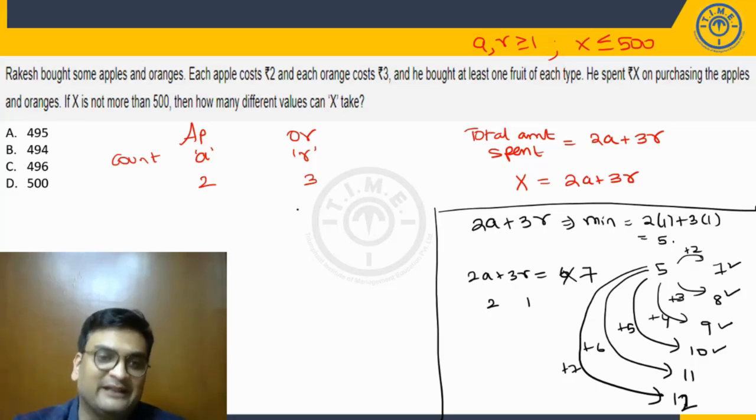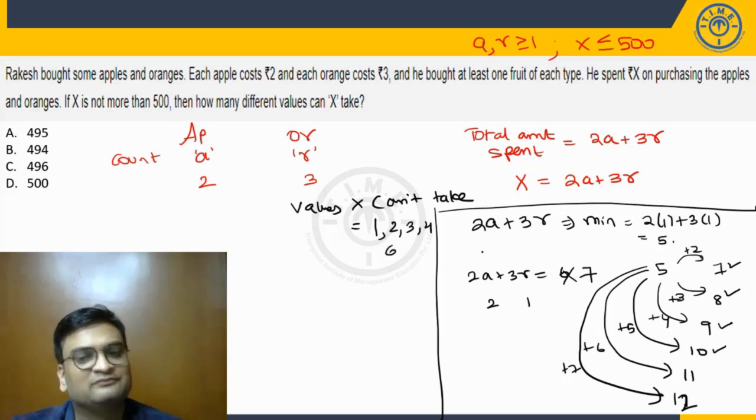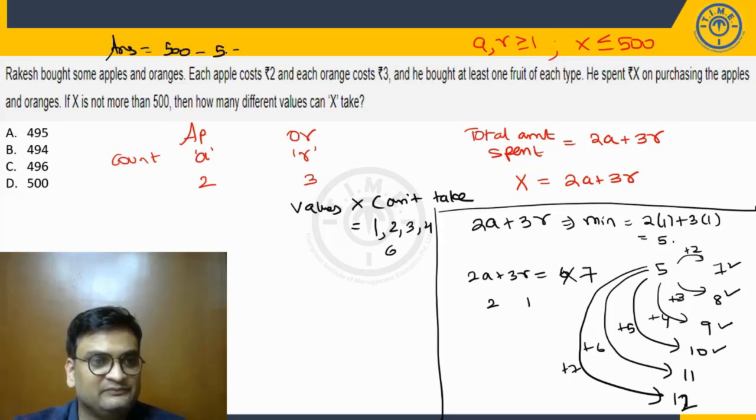So that means, the values that X will not take, less than or equal to 500, are: one value that X can't take is 1, because minimum value itself is 5. It can't take 2, it can't take 3, it can't take 4 also. 5 is possible, it can't take 6 also. But 7 or any value greater than 7 is very much possible. Hence, except for these 5 values, remaining all values are possible for X. Thus, out of the 500 values that are possible, 1 to 500, these 5 are to be removed. Thus my answer is 500 minus 5, which is 495.